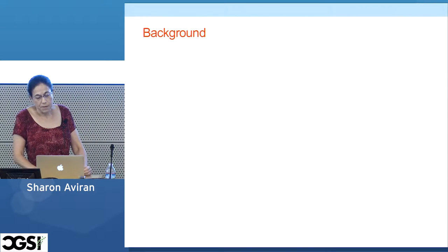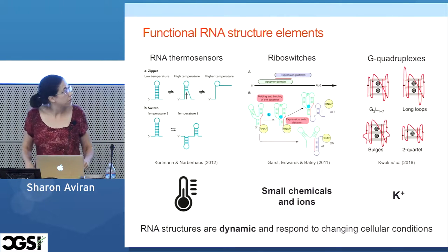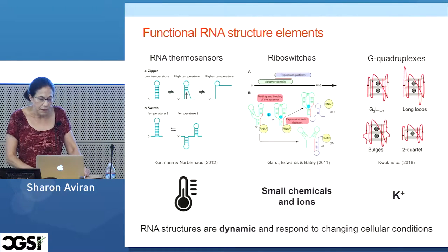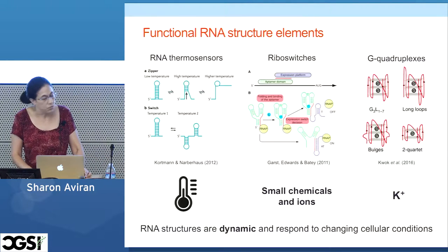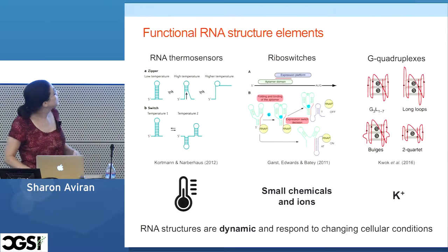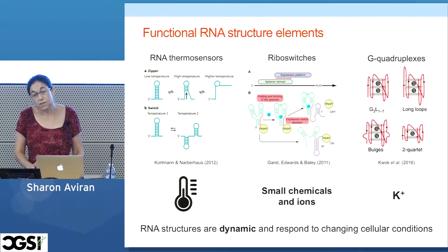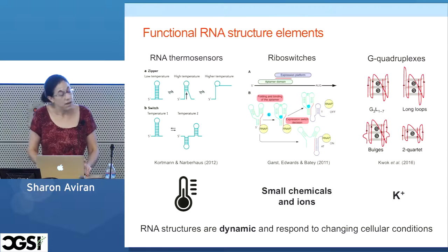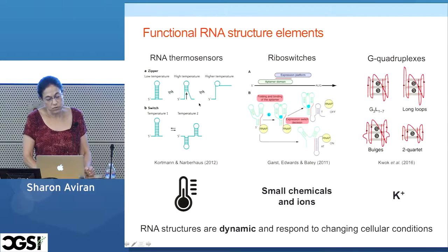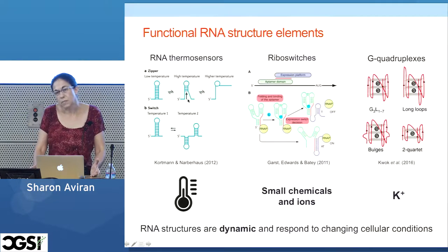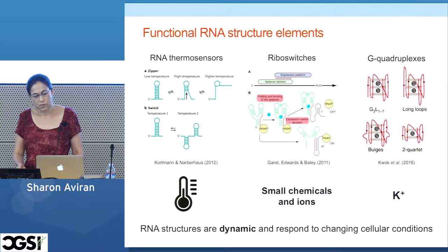In my talk I will give quite a lot of background, so it will be half research, half background. Because we're talking about structure in the context of function, I'll start with three well-known families for which consensus structures exist. Each one of these cases is a whole family of different regulatory elements, and it's well established that these structures serve them in order to carry out their function.